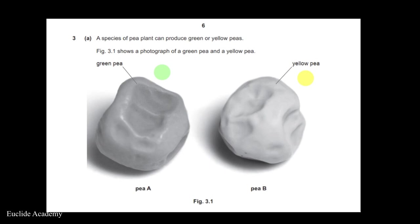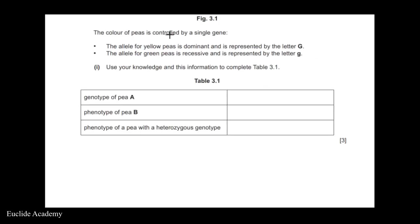The color of peas is controlled by a single gene. The allele for yellow peas is dominant and is represented by the uppercase letter G, and the allele for green peas is recessive and is represented by the lowercase letter g.